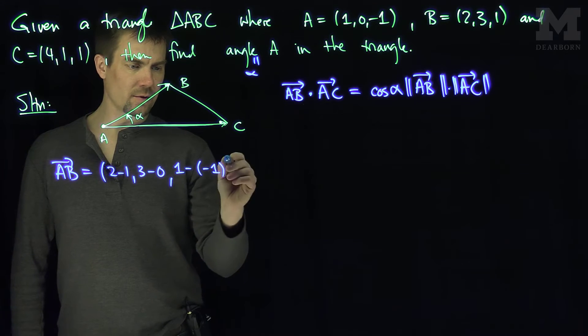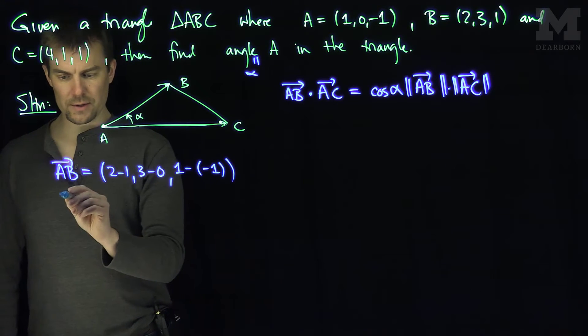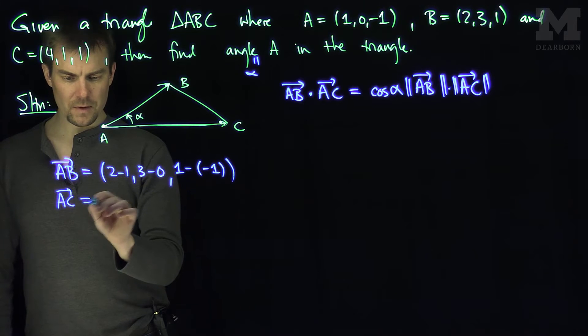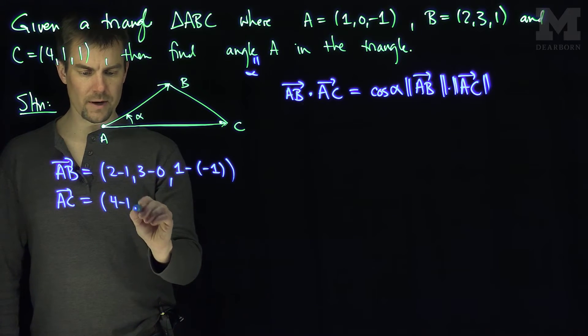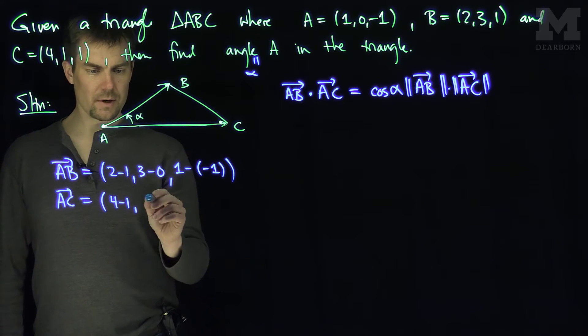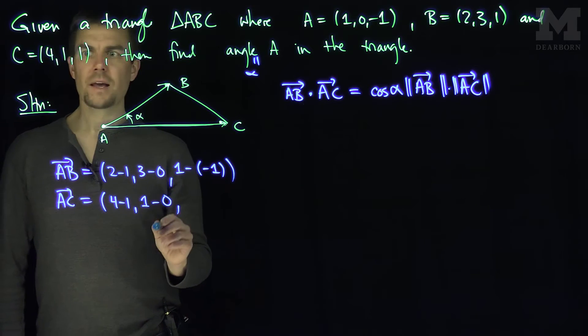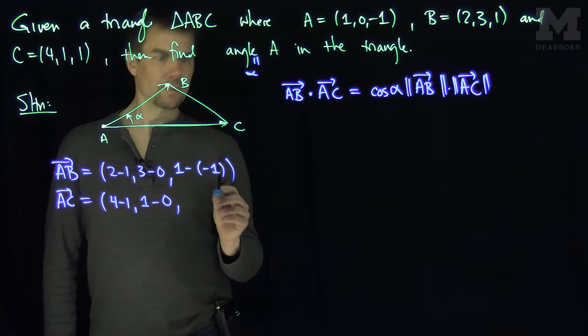Remember that we take the terminal point B and subtract the initial point. The vector AC is going to be 4 minus 1, and then 1 minus 0, and then 1 minus negative 1.